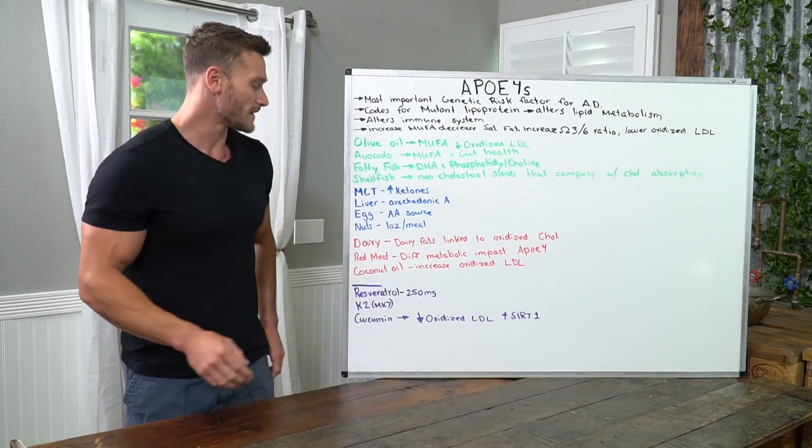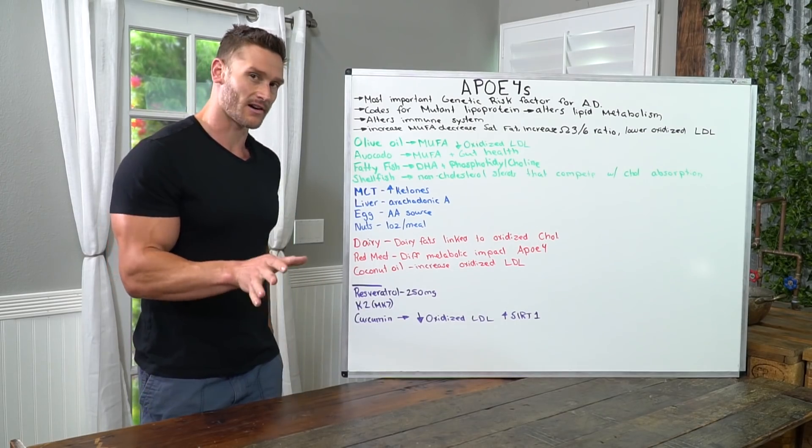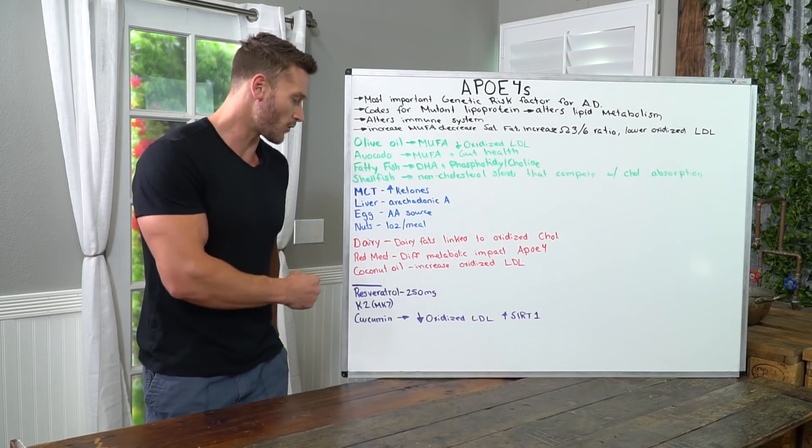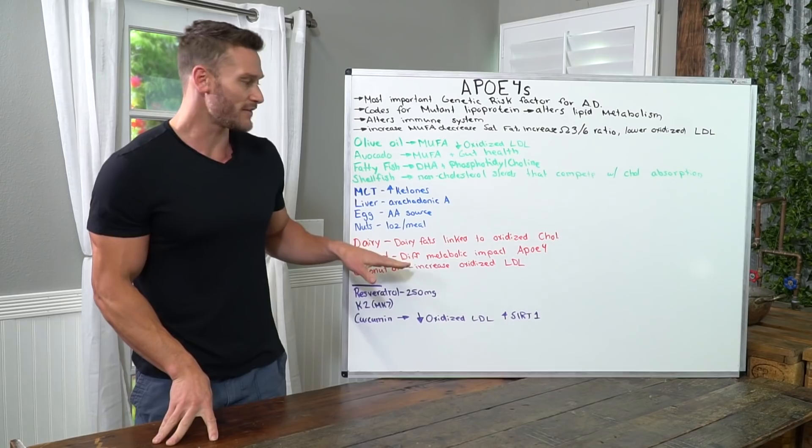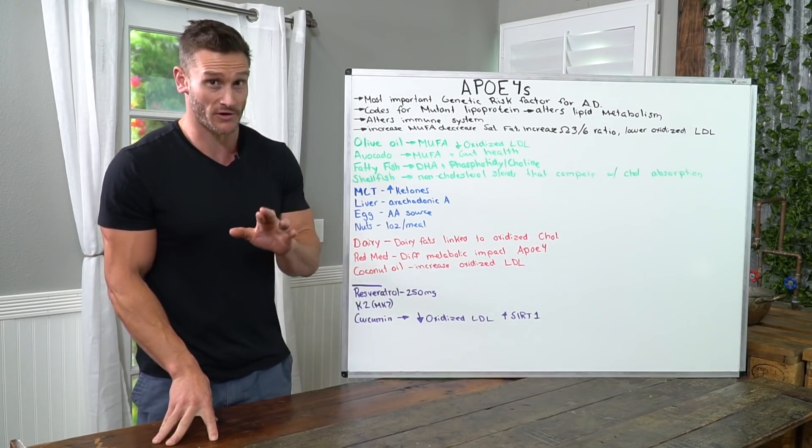Things to avoid entirely. I hate to say it because I like a lot of dairy foods on keto, but if you have this APOE4, you should limit dairy. Dairy fats, although can be good for fat loss and, believe it or not, good for heart disease,